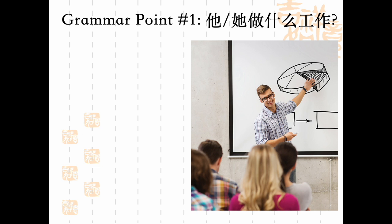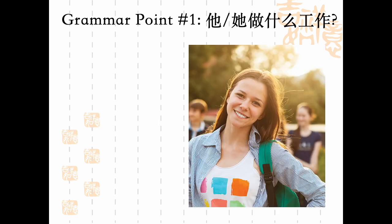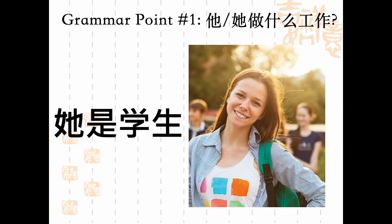Let's practice. You could say 他做什么工作, and respond 他是老师 — he is a teacher. Or 他是学生 — he is a student. If you wanted to say she is a college student, you could say 他是大学生, simply adding the character 大 in front of 学生.